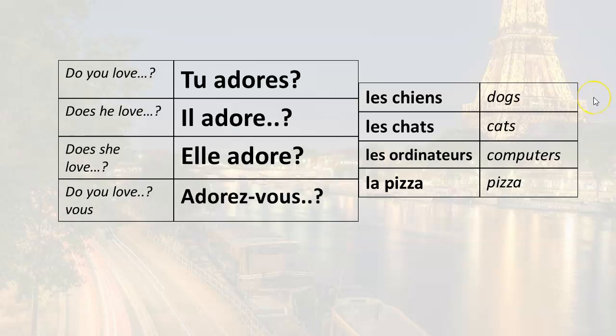If I want to ask the question, do you love dogs? — Tu adore les chiens? Do you love cats? — Tu adore les chats? Do you love computers? — Tu adore les ordinateurs? Do you love pizza? — Tu adore la pizza?